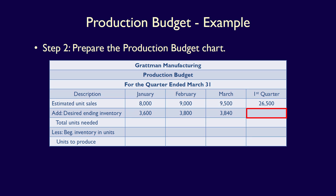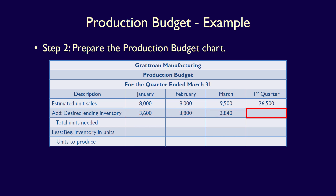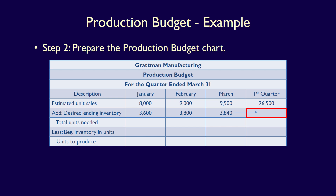What about the desired ending inventory for the first quarter? We cannot simply add up January, February, and March's desired ending inventories. The quarter covers January 1st to March 31st, and the ending inventory for the quarter equals the ending inventory for March, which is 3,840 units. The quarter is a period of time made up of three months, which is why the desired ending inventory for March equals the desired ending inventory for the first quarter, both ending on March 31st.